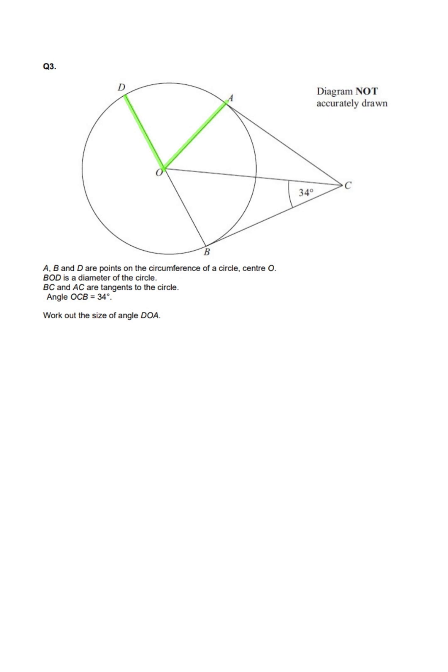In this question, we're asked to work out the angle DOA using the diagram above. Let's break it down. We're told that BOD is the diameter of the circle. That means that the angles that exist inside any points here will be equal to 180 degrees.